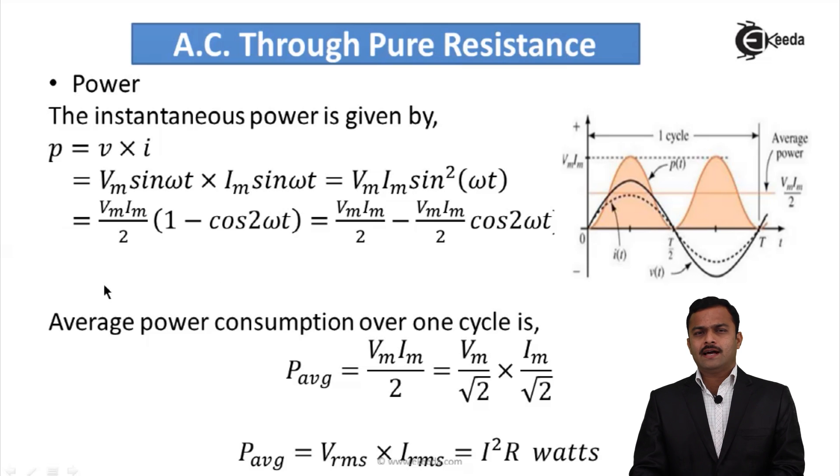Every time whenever I supply AC, average power comes into the picture, so we need to calculate the average power over one cycle. That is given by Pavg = VmIm/2.